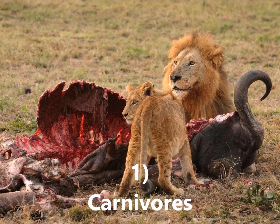Carnivores are animals that only eat meat. They do not eat any plants and only eat other animals. Examples of carnivores are tigers, sharks, dolphins, and polar bears.